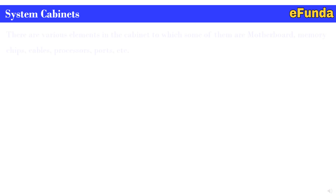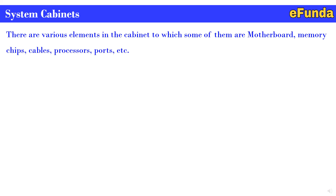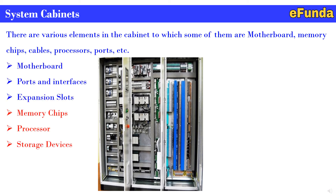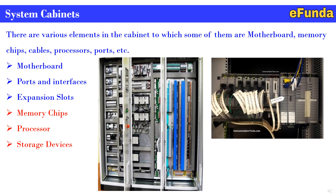Moving on to system cabinets: there are various elements in the cabinet, including motherboard, memory chips, cables, processor ports, etc. The photograph shows a vertical 2-meter height cabinet with all system-related equipment and cards. It includes motherboard, ports, interfaces, expansion slots, memory chips, processor, and storage devices. Another photograph shows how prefabricated system cables are connected to the controller so that the signal flows from the marshaling cabinet to the system cabinet and then to the operator desk for further processing.